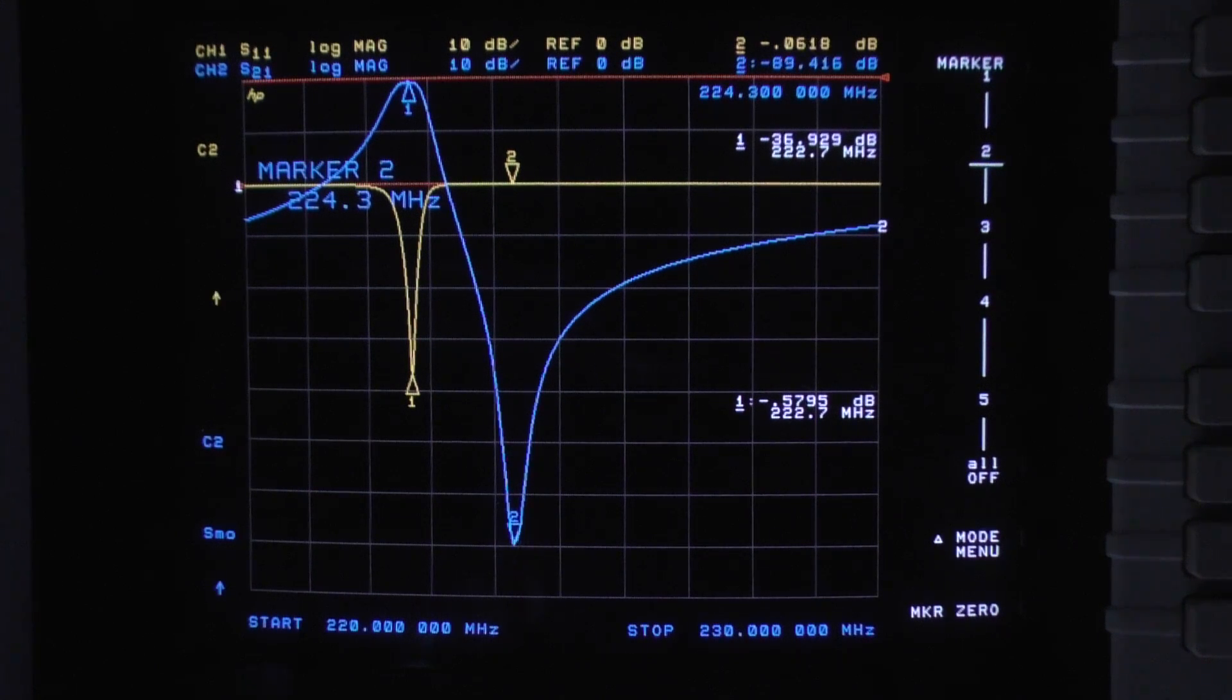I'm seeing on average about a negative 92, 93 dB isolation on one side, negative 95 on the other. Just under six-tenths of a dB insertion loss, right around there, give or take a tenth of a dB. And that does check out under load as well.